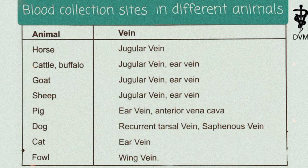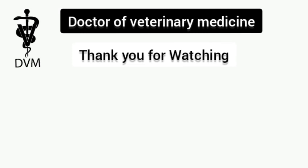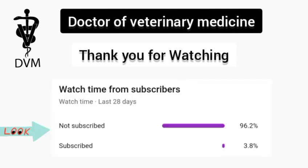For dog, blood is collected from the recurrent tarsal vein and saphenous vein. In the case of cat, blood is collected from the femoral vein. For fowl, blood is collected from the wing vein. We generally collect blood from these animals for different purposes. For any questions, comment below — thank you for watching our video.